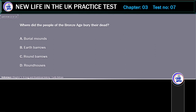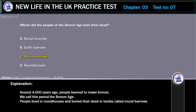Where did the people of the Bronze Age bury their dead? A. Burial mounds. B. Earth barrows. C. Ground barrows. D. Ground houses. Correct answer: Ground barrows. Explanation: Around 4,000 years ago, people learned to make bronze. We call this period the Bronze Age. People lived in round houses and buried their dead in tombs called round barrows.